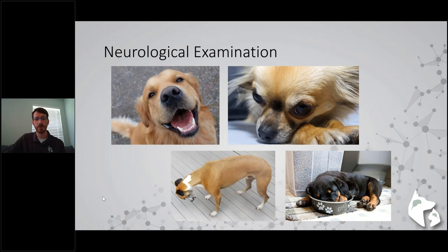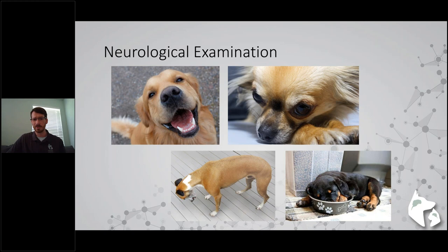Here are some pictures of patients to help characterize alertness level. We have a very happy golden retriever - definitely bright, alert, responsive. A long-haired chihuahua that seems alert but not bouncing around - more of a quiet, alert, responsive example. A greyhound whose head is low and not wagging its tail - an example of being obtunded. And when you get to worsening mentations like stuporous or comatose, you get patients laying on their side and not responsive.